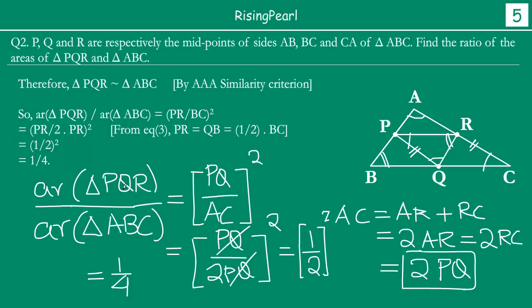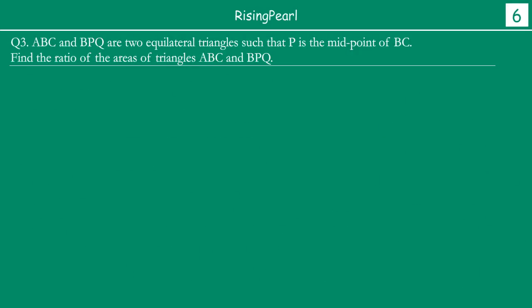So the ratio of area of the small triangle PQR to the area of the big triangle ABC is equal to 1 by 4. Let's take a look at one last question before we wrap up this webisode.